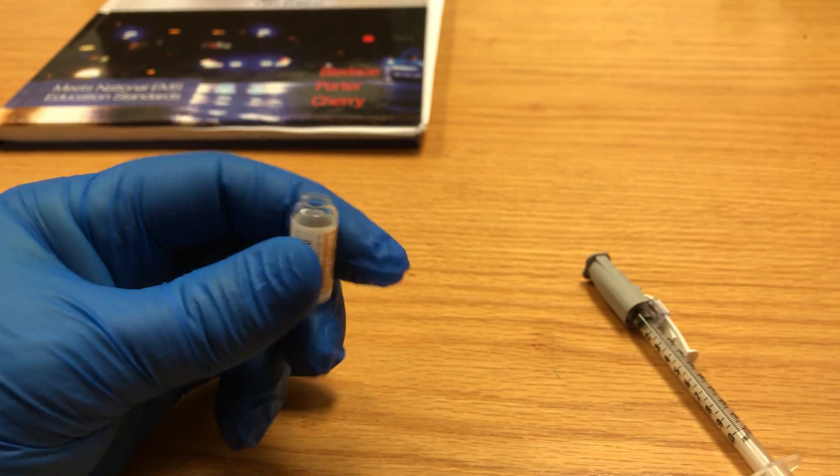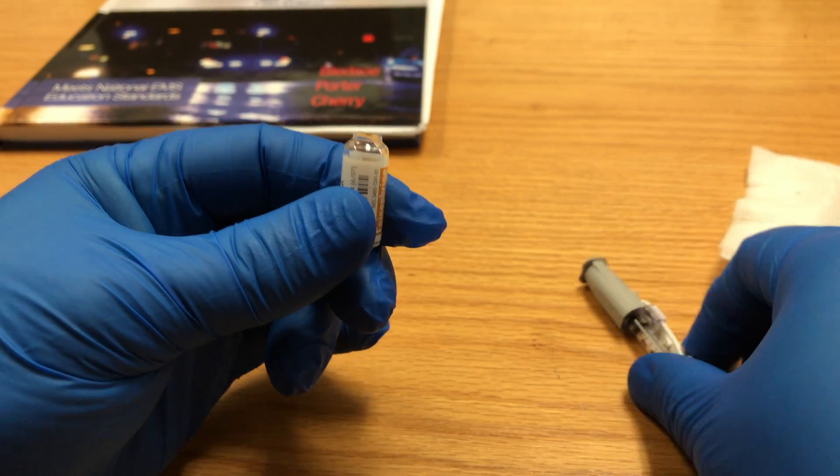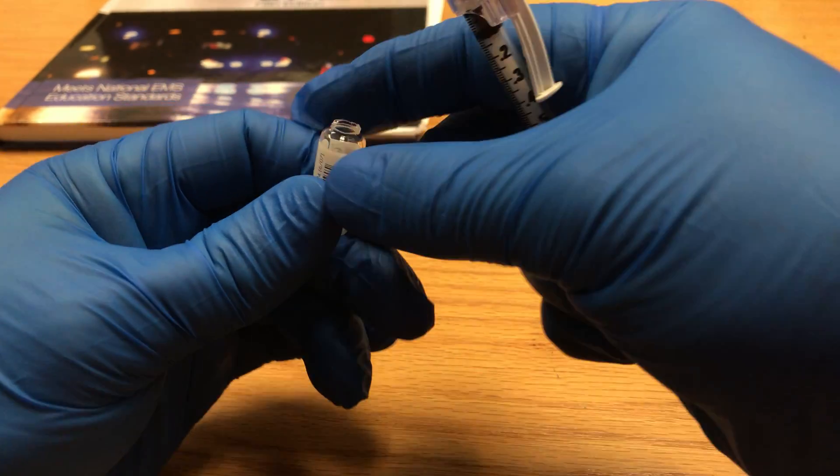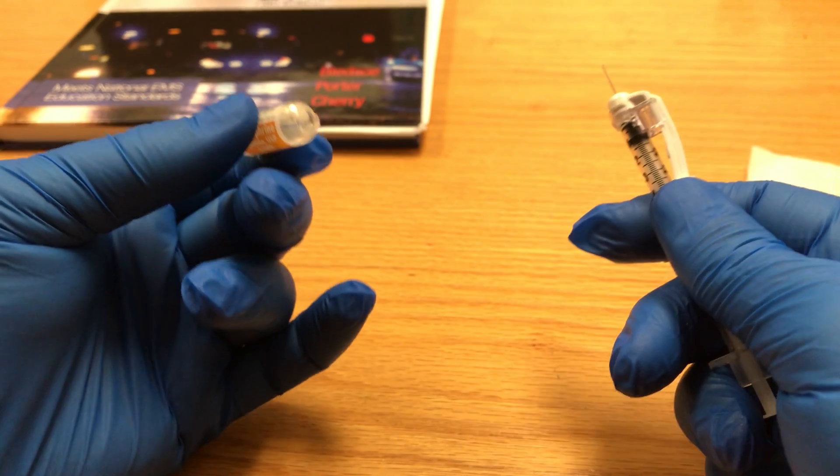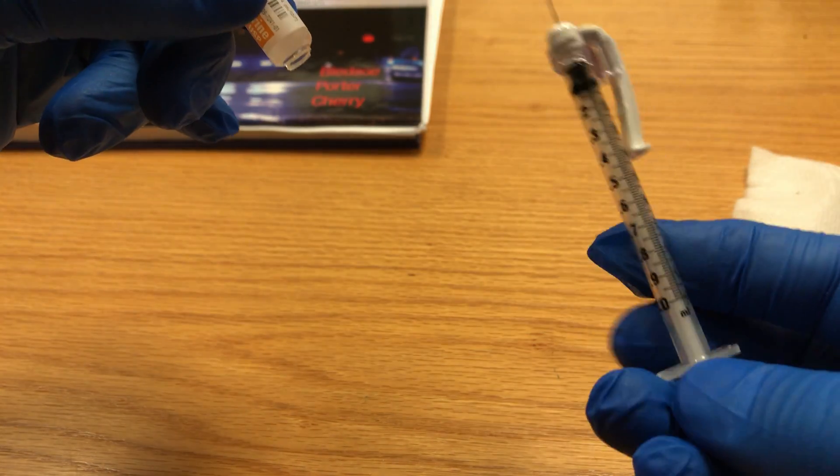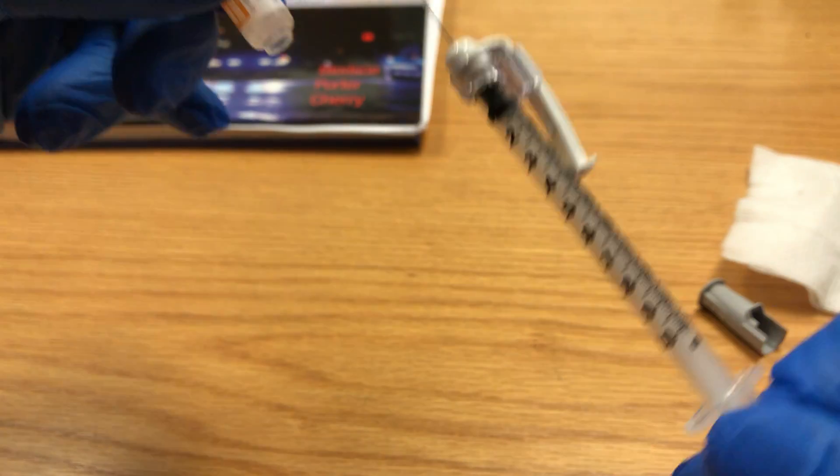This I typically put in the sharps container, and now I have my ampoule with my medicine. Take the cap off of my syringe. One of the cool things about ampoules is you can actually turn it upside down and it won't come out. Because I want to be able to get all of the medicine out, I can insert my needle right into the bottom and start withdrawing all of the medication.